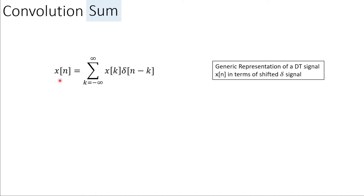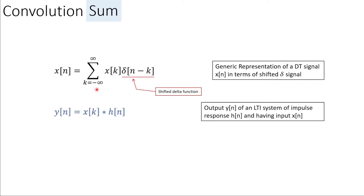Now we take a look at convolution sum. As we have studied before, this is the discrete-time representation of sequences. We know that a discrete-time sequence x[n] can be represented in terms of shifted delta functions through this mathematical expression. In a similar way, we know that the response of an LTI system can be expressed as the convolution of the input discrete-time sequence and the discrete-time impulse response of that LTI system.